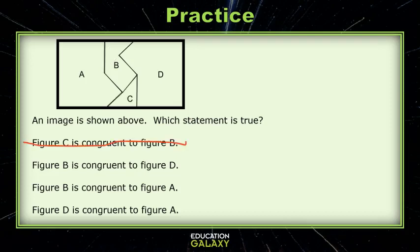All right, let's check out the next statement. Figure B is congruent to figure D. Okay, let's check it out. Oh, no way. D is much bigger than B, and their shapes are off.